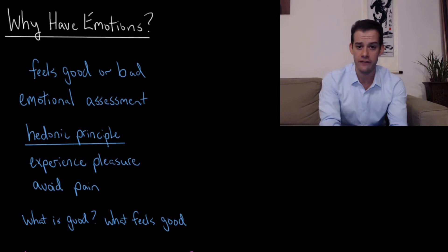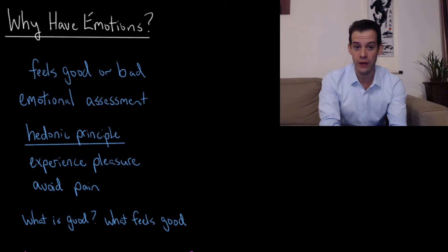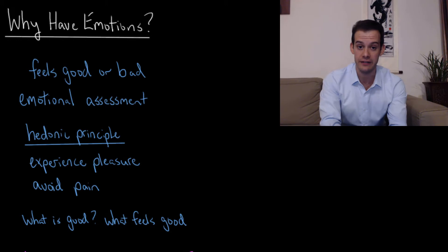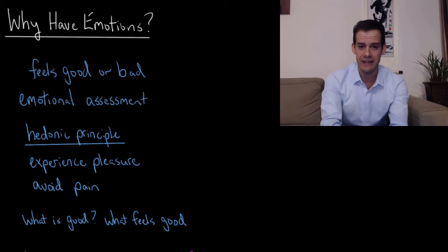You might recall in the first video in this unit I talked about multidimensional scaling — the idea that we could compare emotions to one another and map them out based on their level of physiological arousal and their valence, which referred to whether they were positive or negative experiences. I want to return to this idea of valence and think about emotions simplistically as good or bad — things feel good or they feel bad — and that's a very basic level emotional assessment.